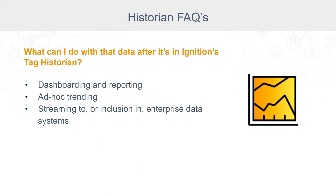So the data is there and available. What can you do with that data after it's in a historian? Pretty much anything you want to — dashboarding, reporting, and ad hoc trending are very common. A lot of folks don't necessarily realize it's relatively easy to stream the data to certain enterprise data systems. For example, there are Azure and AWS injector modules available from Inductive Automation. Those are Sirius Link modules that can plug right into the tag system and stream historical data up to a central location. You can also set up RESTful interfaces that allow for querying of arbitrary time periods, connecting pretty much any modern software system to Ignition Historian over REST via WebDev or the Web Services module.